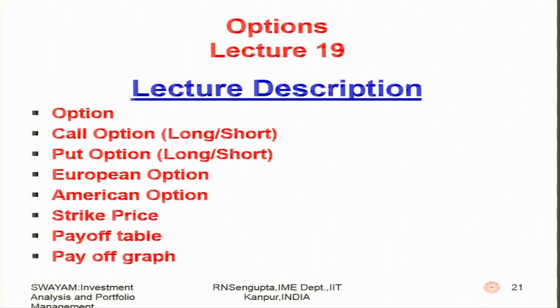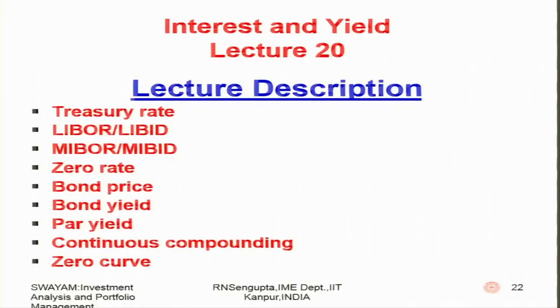Under lecture 19, we will cover options — call and put (long/short), European and American options, strike price, payoff tables, and how payoff graphs are calculated. Lecture 20 covers interest and yield: treasury rates, LIBOR, LIBID (London Interbank Offer Rate and Bid Rate), Mumbai Interbank Offer Rate and Bid Rate, zero rates, bond prices, bond yields, par yield, continuous compounding versus simple interest rates, and how the zero curve is calculated. Lecture 21 continues with interest and yield, covering forward rates, compounding interest, instantaneous forward rates, forward rate agreements, term structures, duration, and how duration is used to assess bond and investment performance.